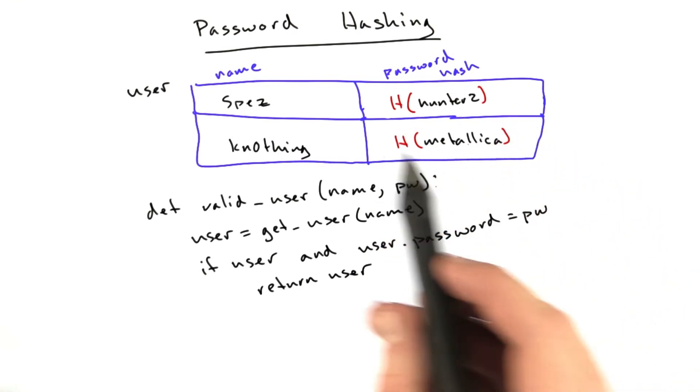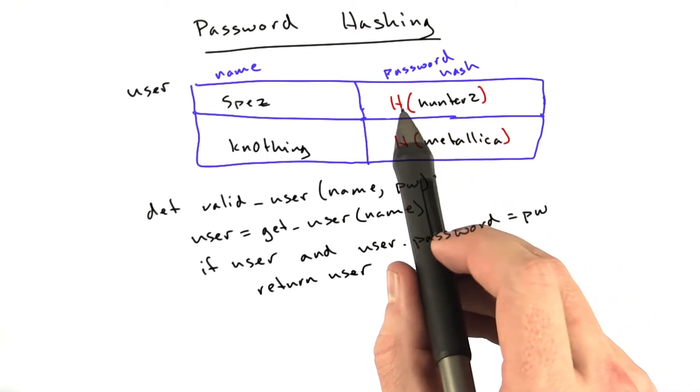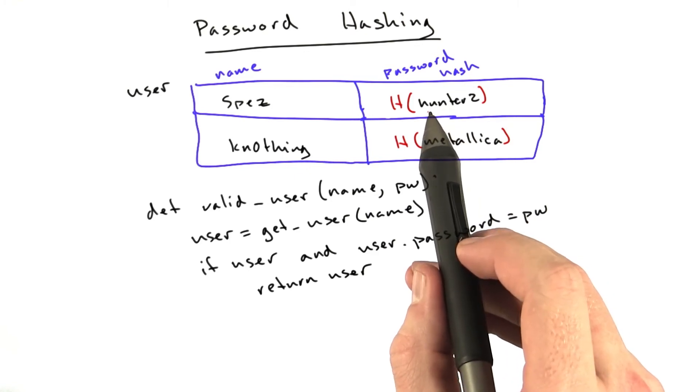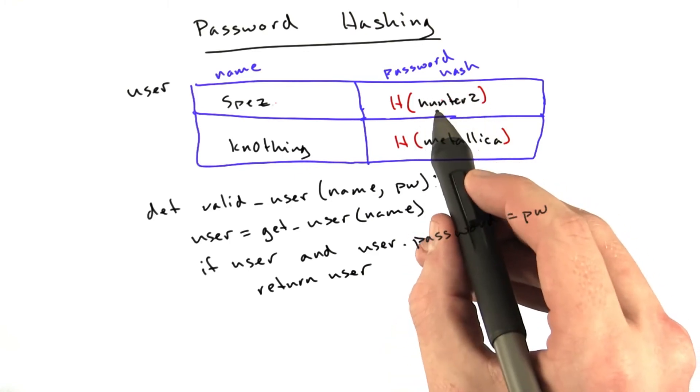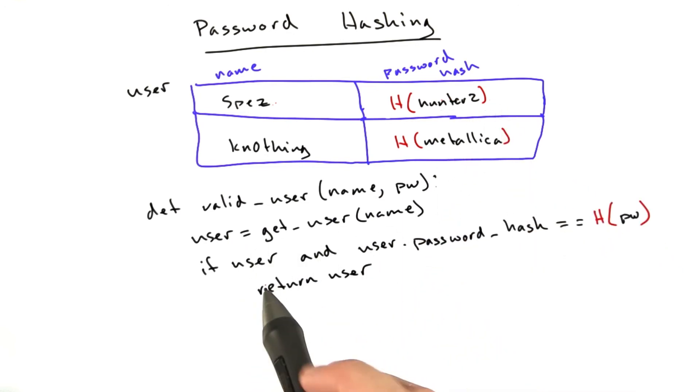And if our database gets compromised, all the attacker has is a bunch of password hashes. And you know it's very, very difficult, basically impossible, to turn the hash of this into the actual input parameter. This function changes a little bit.